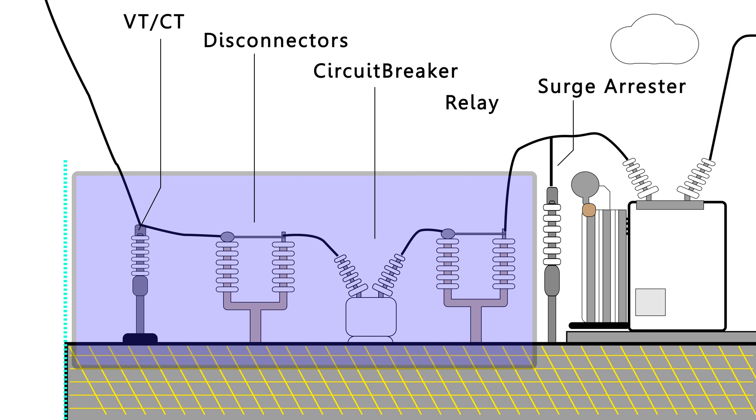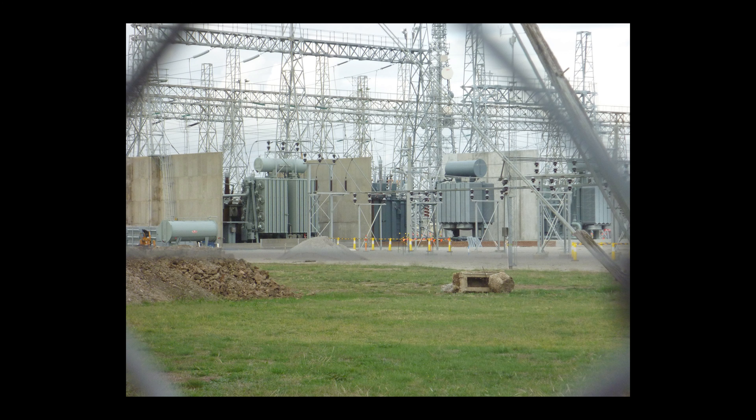There's also one other type of asset which is important. This is called the surge arrestor. The job of the surge arrestor is to protect the transformer and other parts of the substation against high frequency surges such as lightning strikes and switching surges. The conventional protection system isn't fast enough to protect against lightning strikes and switching surges. So all these assets together are called the protection system.